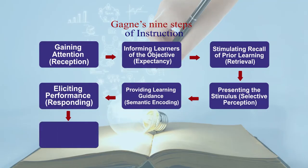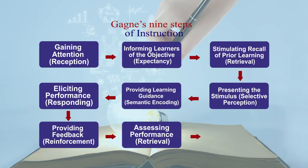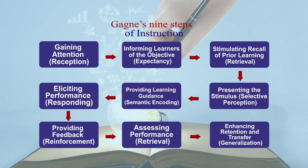When they respond and reply, what do you do? You give them feedback to reinforce their learning — that is called providing feedback to reinforce learning. After reinforcement, you assess their performance: what was decided at the expectancy level, whether it has been achieved by the learners or not. So you use different types of assessment tools, you ask them to perform independently so that you can assess their performance. And then you make them ready to retain whatever they have learned, to enhance that and transfer it to some other situation — that is called generalization.